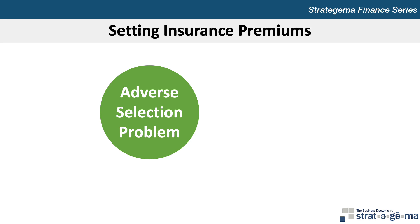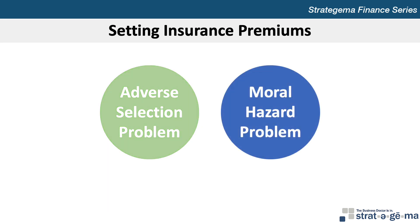The adverse selection problem is also reduced when insurance is required for all members of a group. Once individuals are covered by insurance, they take more risks as they recognize that they are protected by insurance. This type of behavior is known as the moral hazard problem in the insurance industry. Insurance companies must consider that some people will become more careless after they become insured, which leads to more insurance claims, and therefore they must attempt to set premiums to reflect the higher risk of claims.